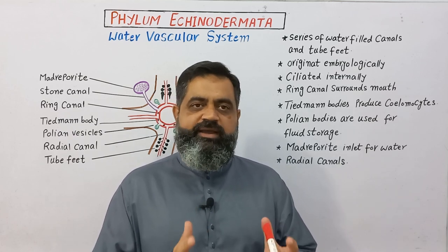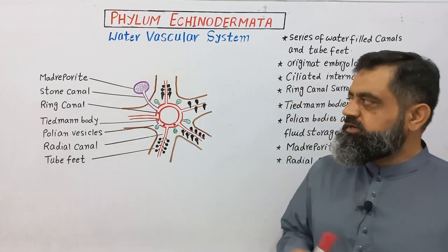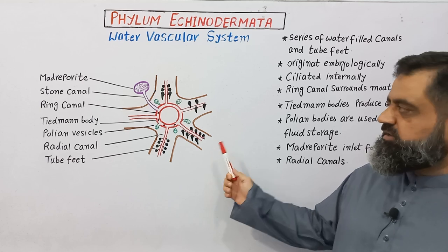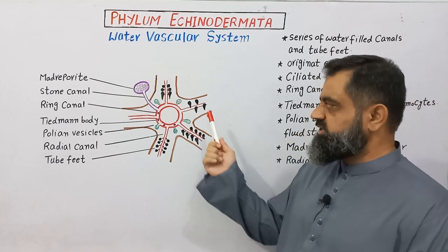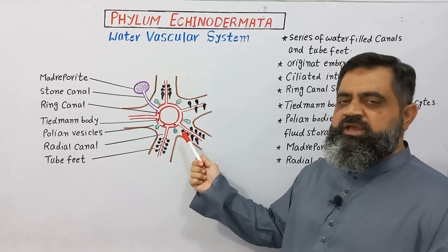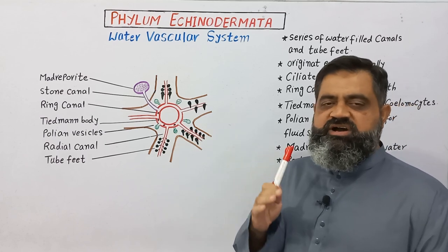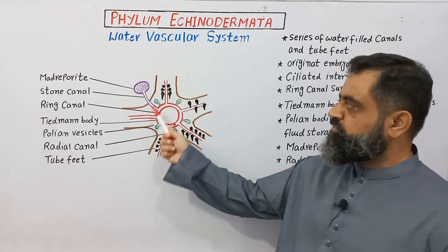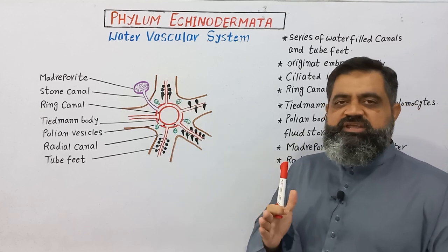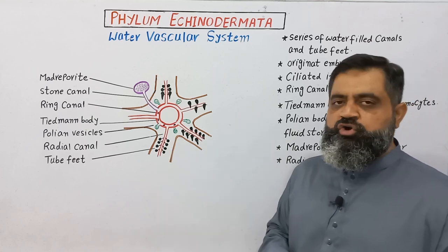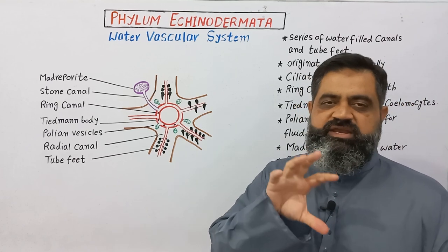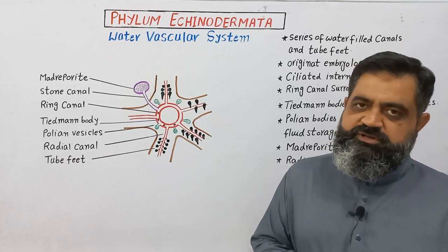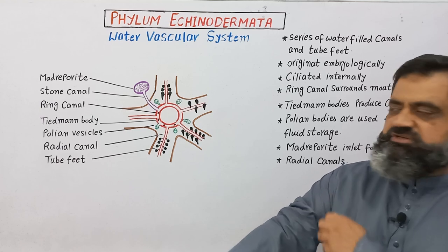First of all we have to look at the diagram, which I have already drawn. If we take a cross section of a sea star, as you know a sea star has a central disc and from the central disc five arms originate — one, two, three, four, and five. We have taken a cross section across this central disc and the five arms area, which contains the water vascular system of this animal.